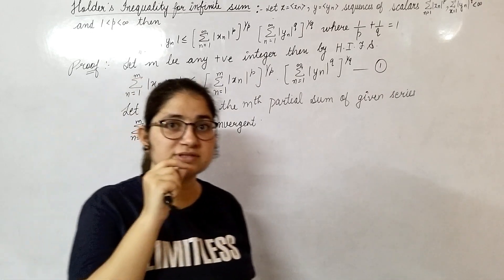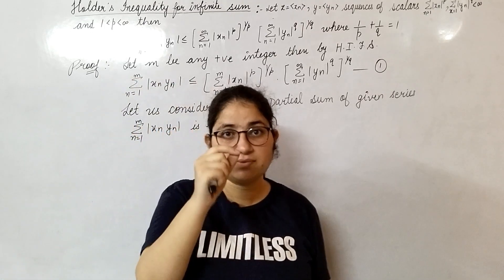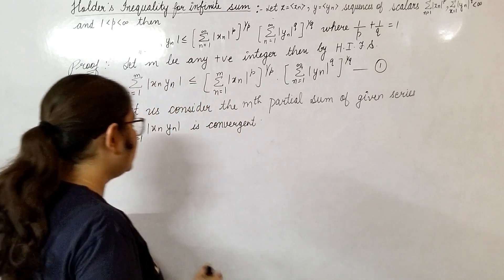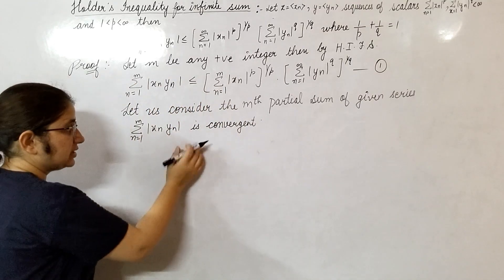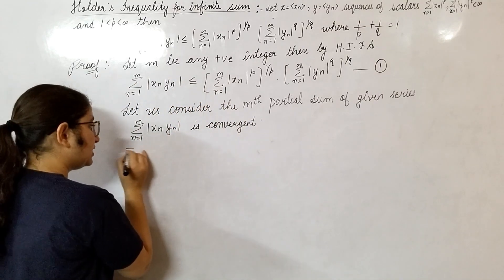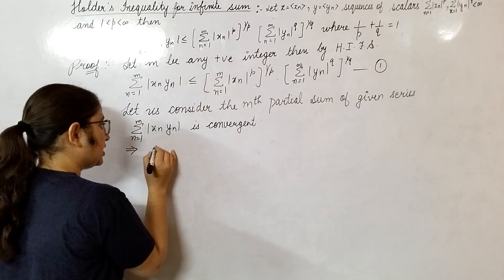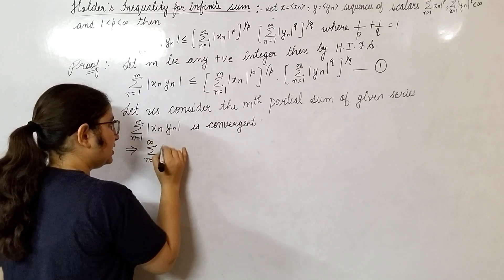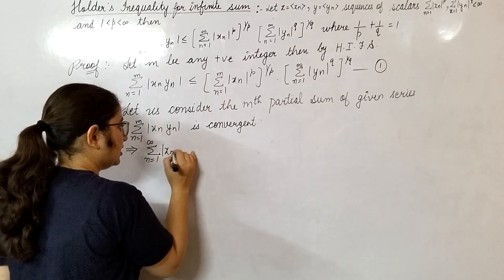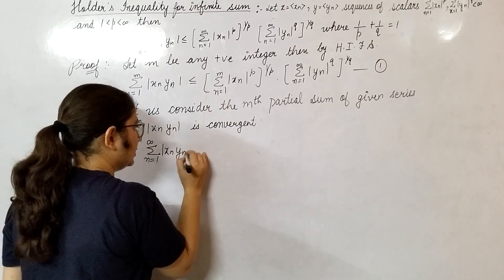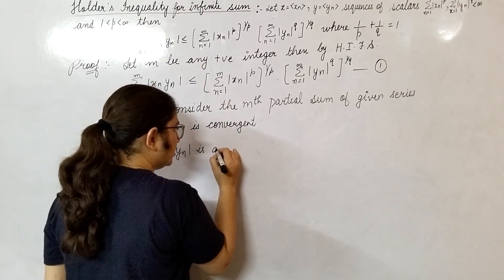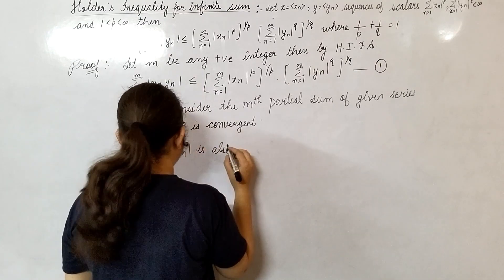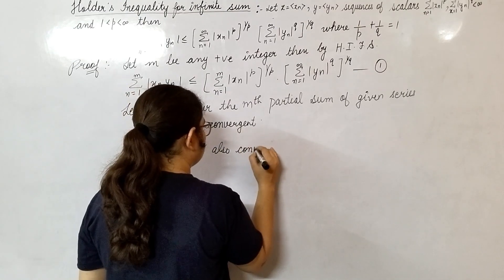You know that if the mth partial sum is convergent, then the series will also converge. So this implies that summation n from 1 to infinity of x_n y_n is also convergent.